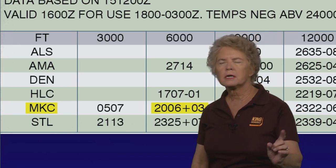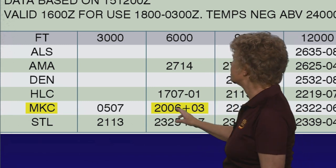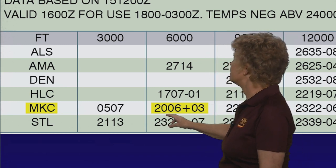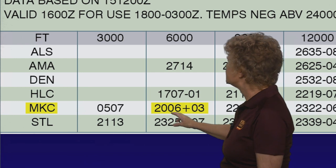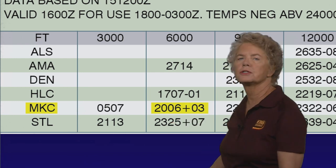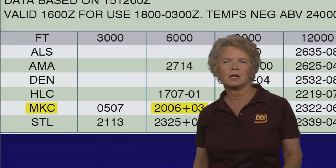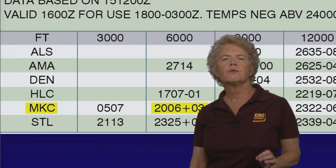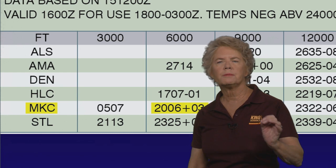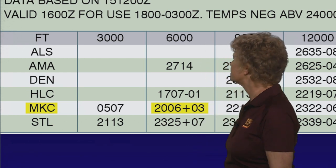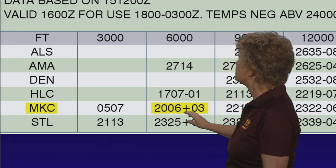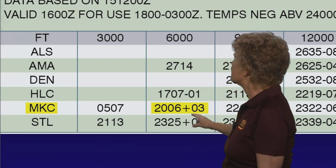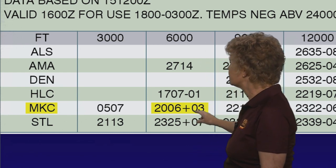The second two digits are the wind speed, so the speed is 06, or 6 knots, and then we've got the forecast temperature at that altitude, which is a plus 3 degrees Celsius.